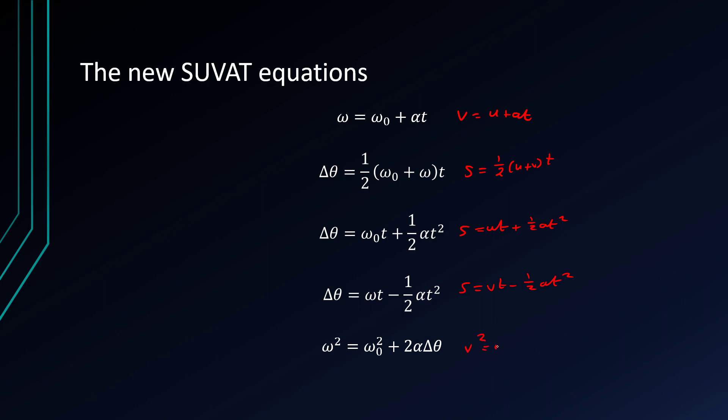And the last one rather unsurprisingly comes from V squared is U squared plus two A S, which now reads omega squared equals omega nought squared plus two alpha delta theta.